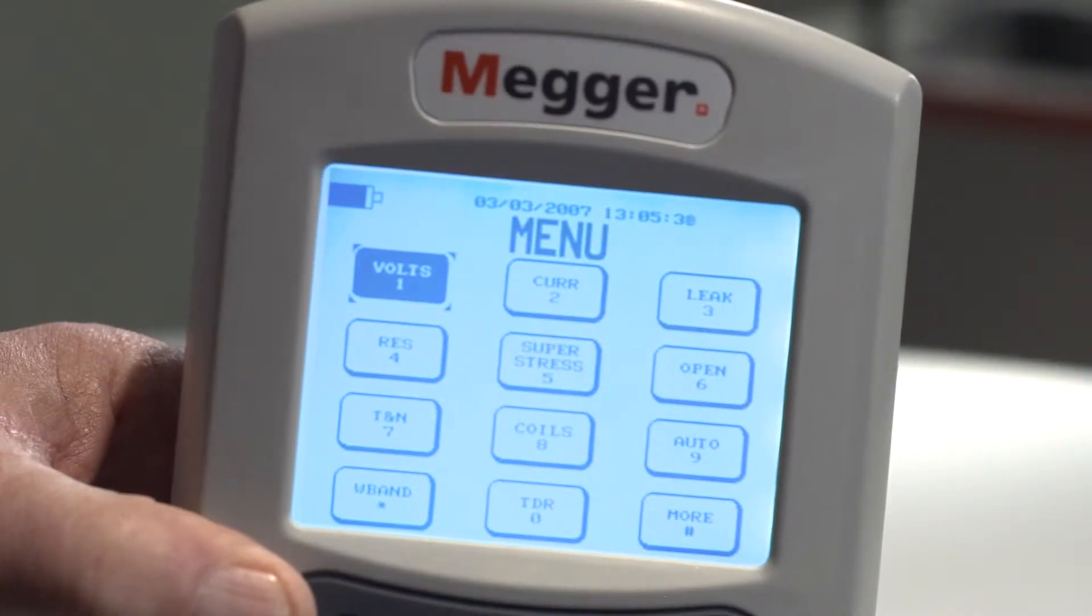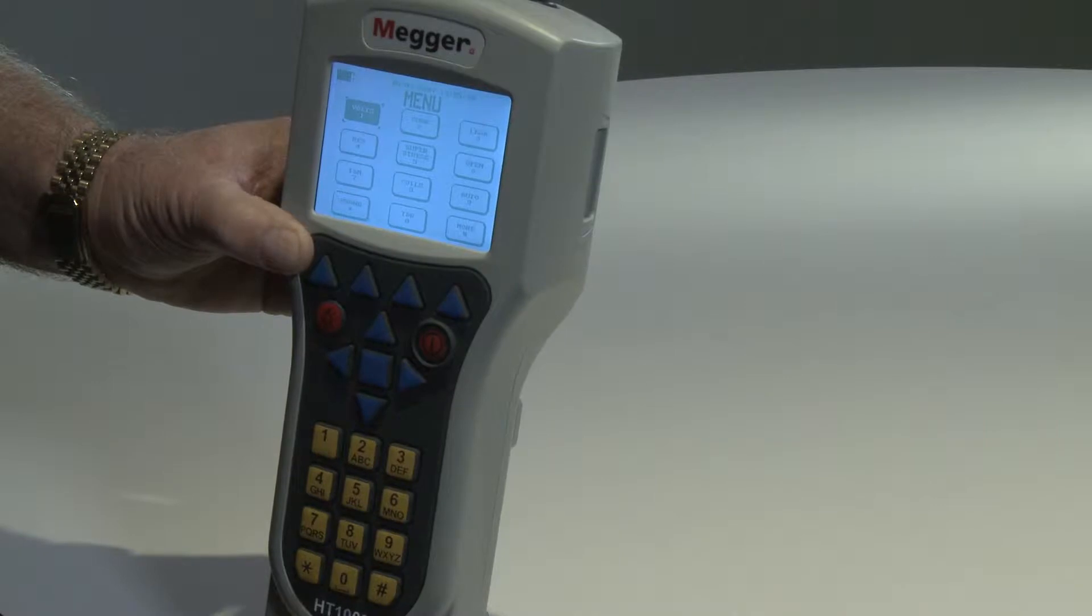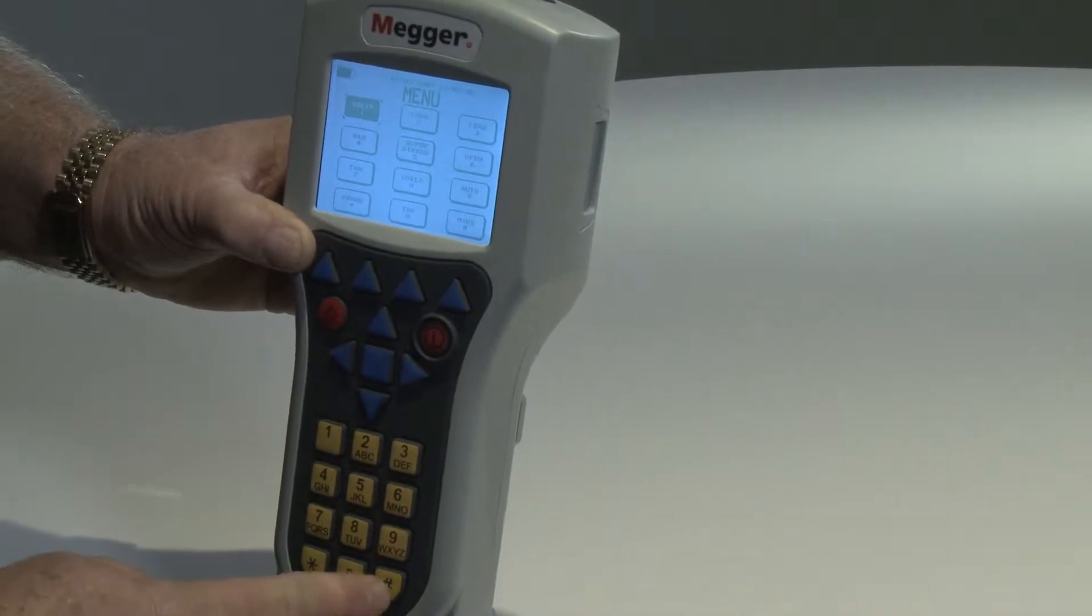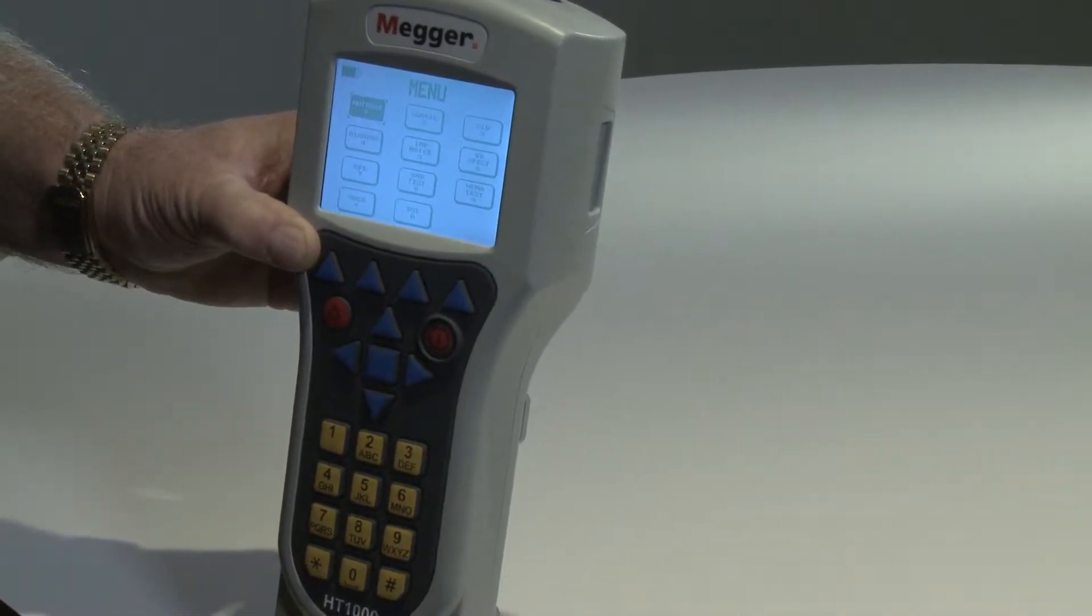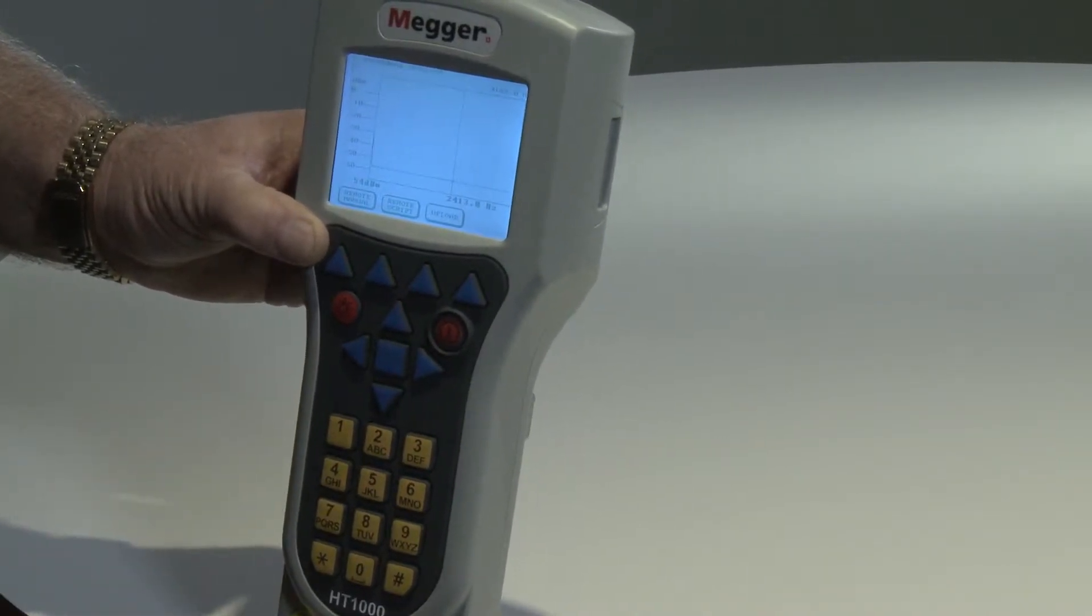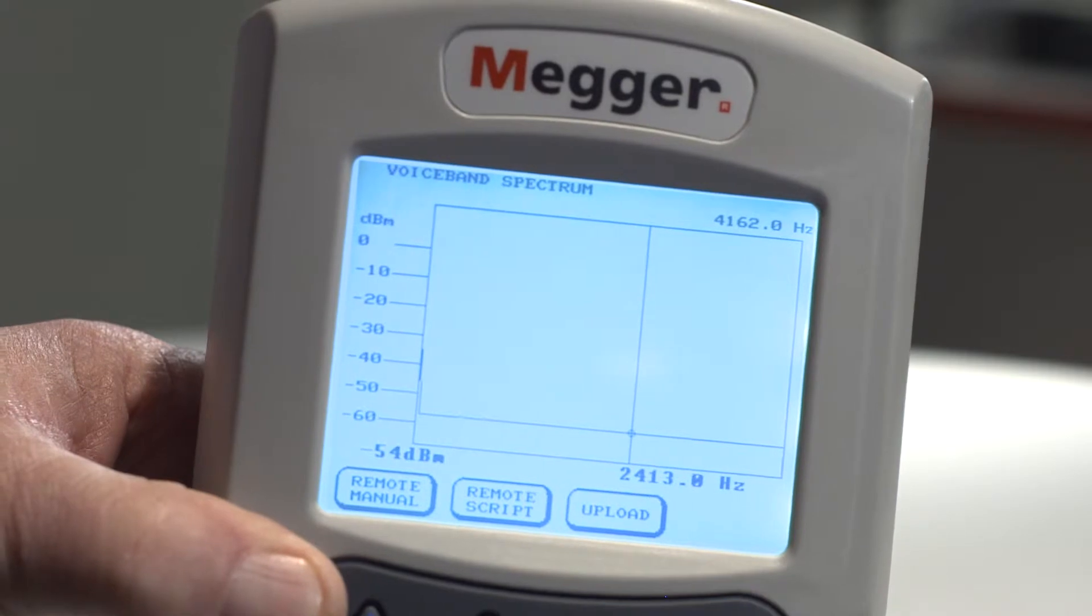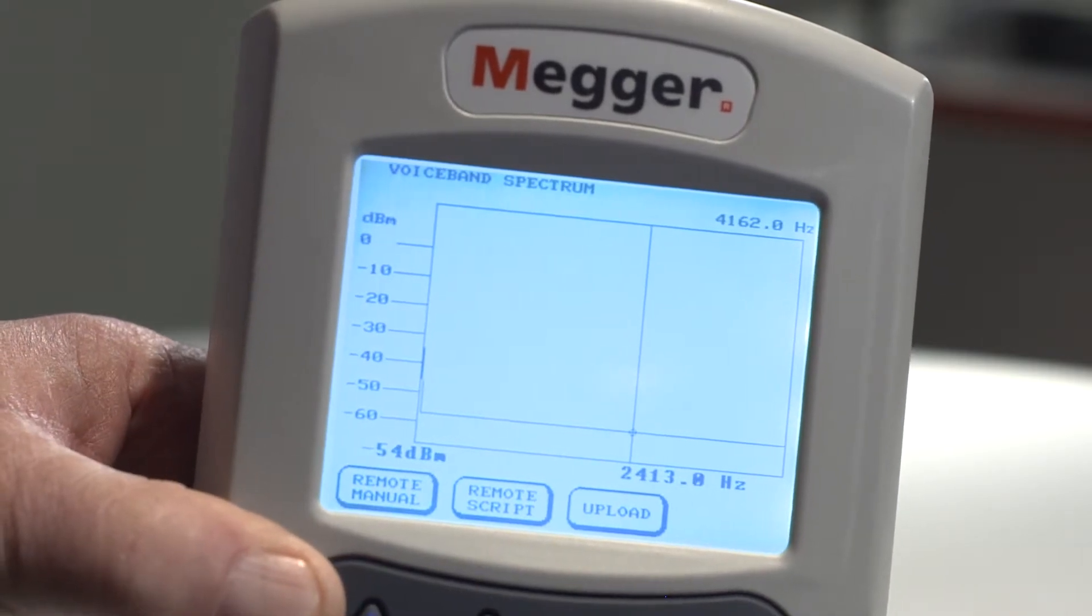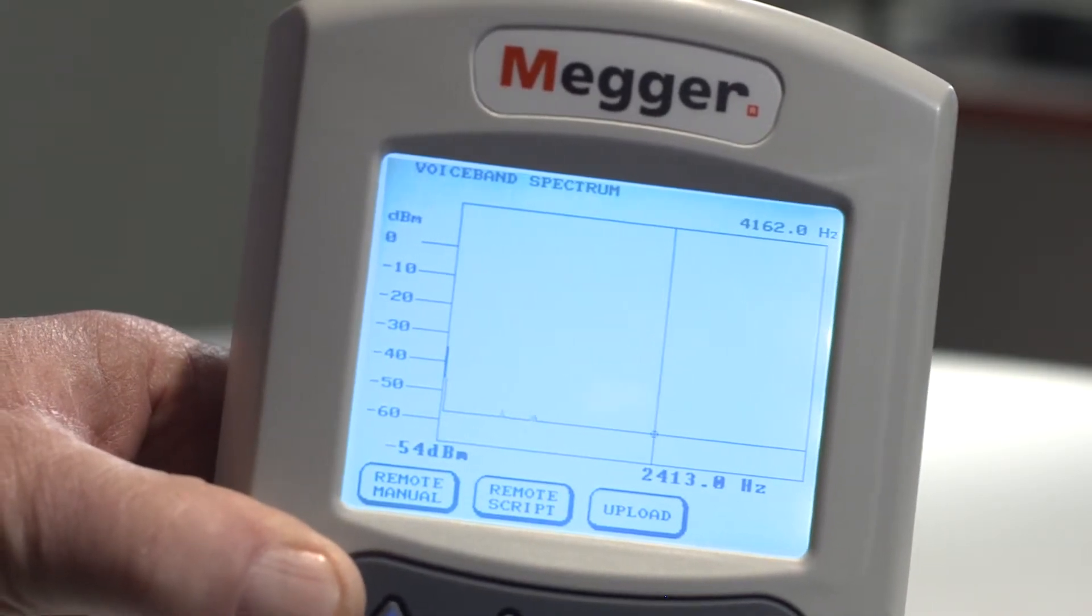From the main menu, access the Voiceband Spectrum Analyzer by pressing the pound key on the alphanumeric keypad and then pressing number 6 on the next More menu. When VB Spectrum Analyzer is selected from the More menu, the unit displays immediately.